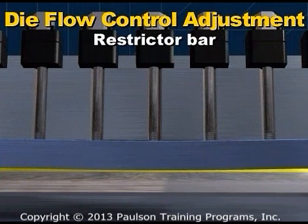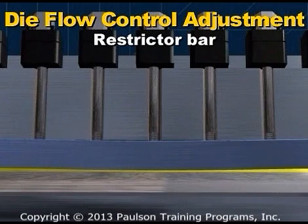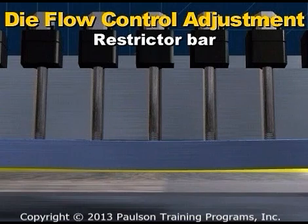Restrictor bar adjustments do not provide as fine a flow adjustment as the flexible lip. The restrictor bar is stiffer than a flexible lip and the adjustment bolts are heavier and placed farther apart, typically 3 inches on center.